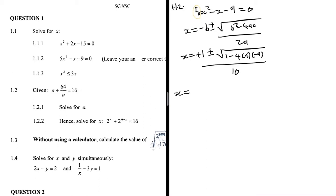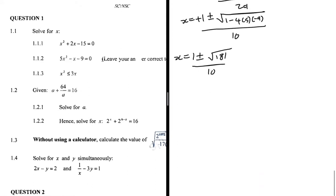So x = (1 ± √(1 - 4 × 5 × (-9))) / 10. Putting the discriminant into the calculator gives 181. So x = (1 + √181) / 10 or x = (1 - √181) / 10.